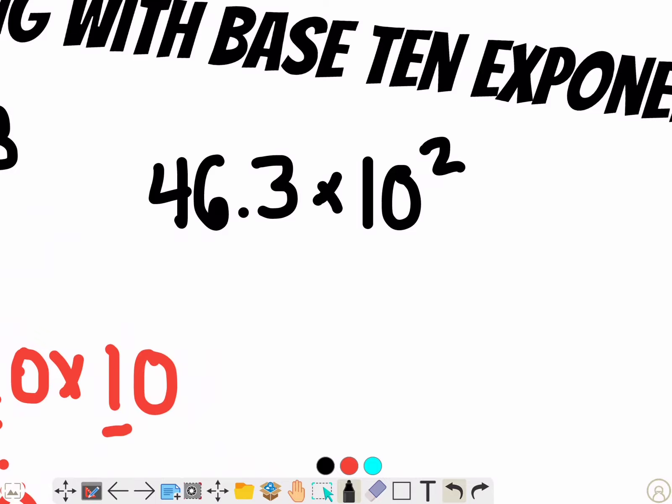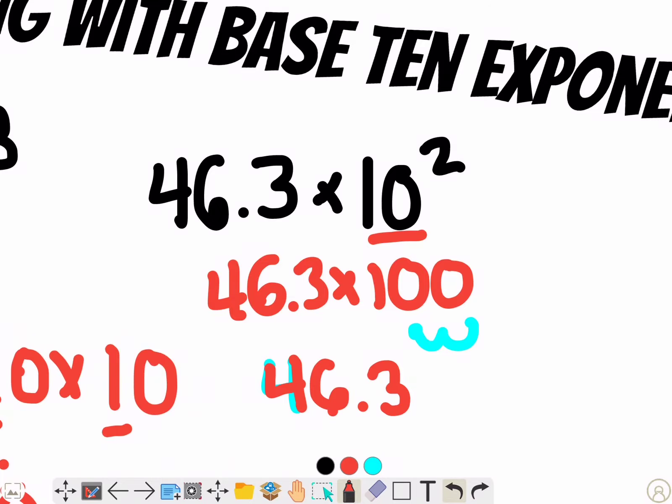Now you have to figure out what ten to the second power is. You can probably figure that out in your head - it's ten times ten, which is one hundred. So you're really doing forty-six point three times one hundred. That hundred tells you to jump your decimal over two places. I'll rewrite the number forty-six point three and jump the decimal over two places, putting a zero there to get four thousand six hundred thirty.